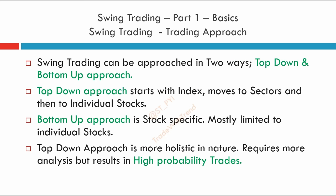Now we come to our trading approach. There are two approaches you can follow: the top-down approach and the bottom-up approach. In the top-down approach, we start with the broader market index, then move to sectors, and then pick individual stocks. This approach is more holistic and in my opinion gives you more high-probability trades. In the bottom-up approach, you don't look at the index or sectors — you simply follow a stock-specific approach and pick stocks for swing trading.